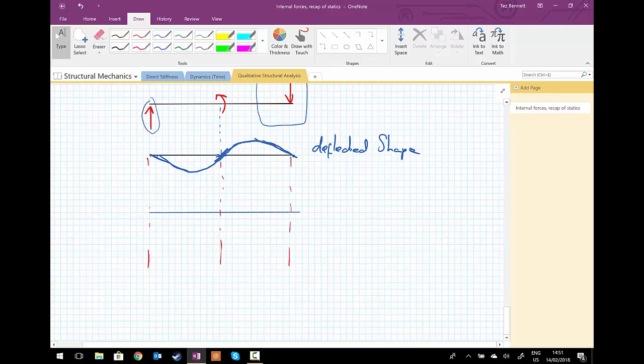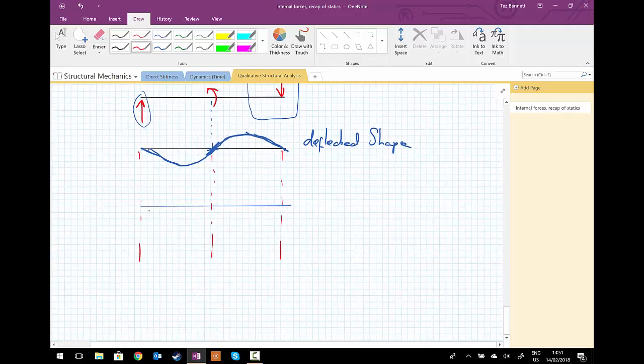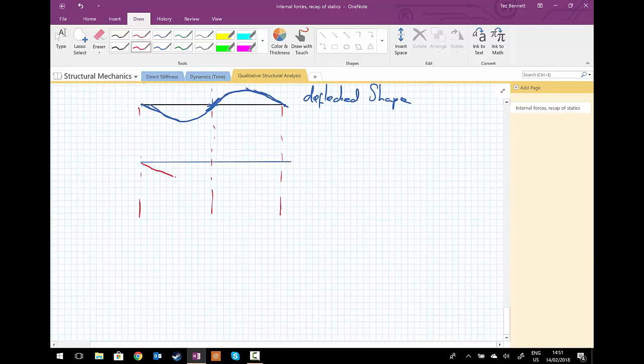So moving from the left-hand side of the beam, we are under tension underneath the beam.